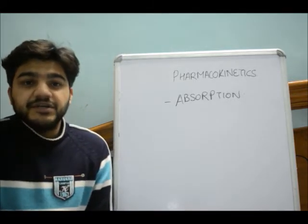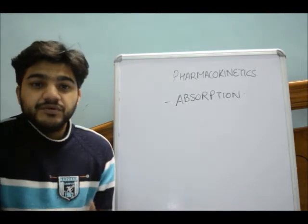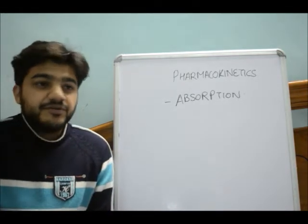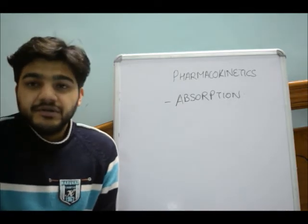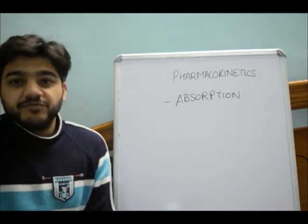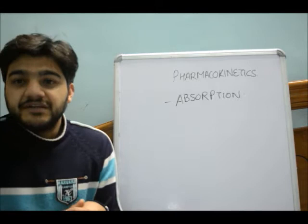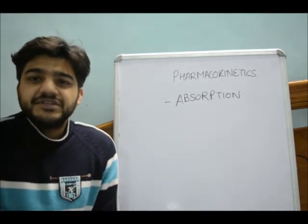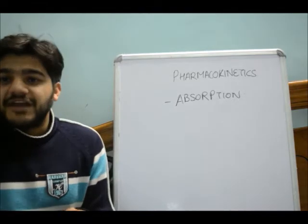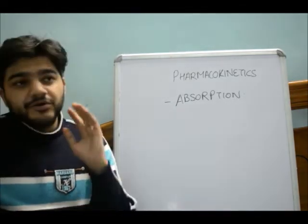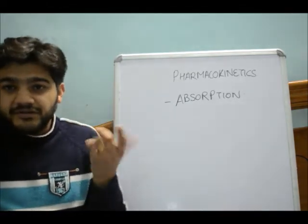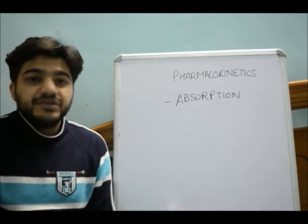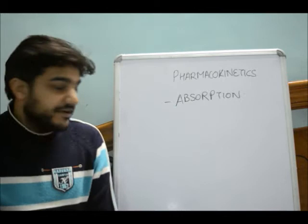If the site of action is somewhere in the body, the drug ultimately has to reach the systemic circulation. If it is being used for a local purpose — on the skin, in the eyes, or in the ears — it may not even need to reach the systemic circulation and will have its effect at that site only. But mostly, reaching the systemic circulation is required.